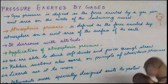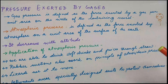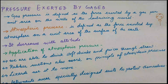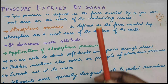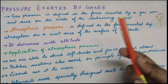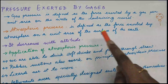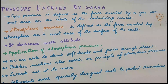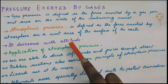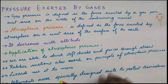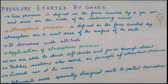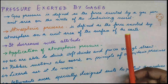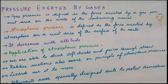Air is denser towards the surface of the Earth. Just as going deep into water increases pressure on you, climbing a mountain decreases the pressure as you go higher. Atmospheric pressure can be defined as the force exerted by the atmosphere on a unit area of the Earth's surface. It is almost the same in all directions at the same altitude, but as you go higher the atmospheric pressure decreases.